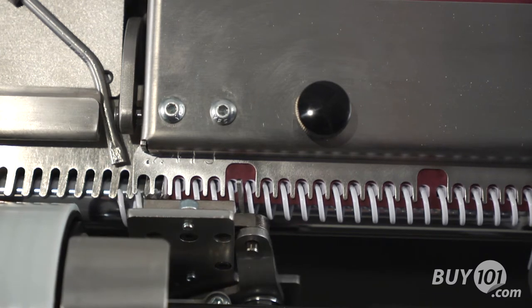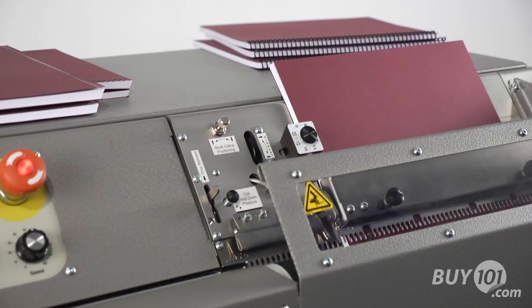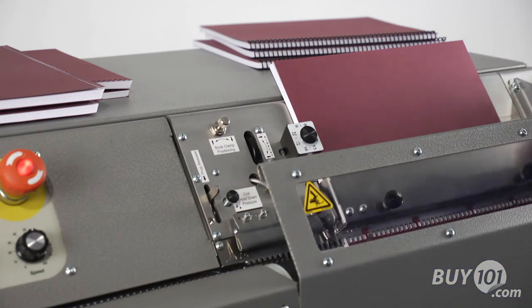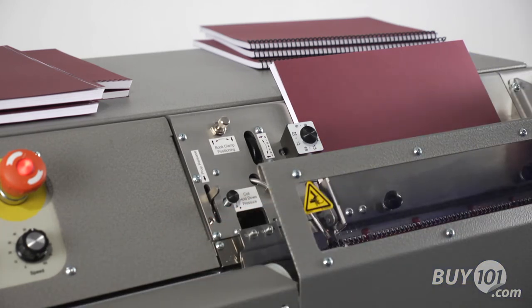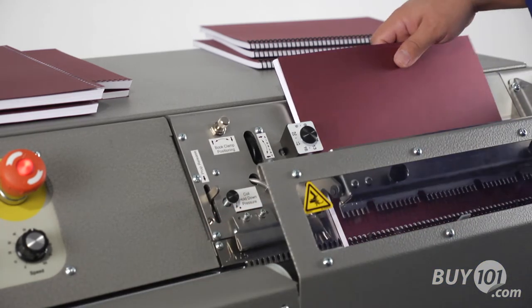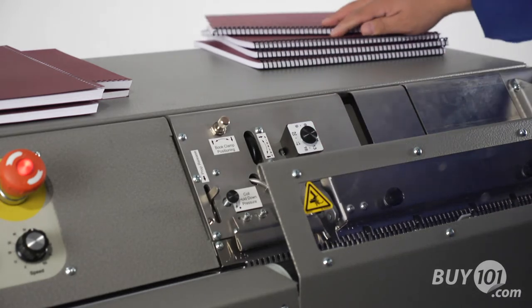Side lay, book clamp, and spine former work together to make sure each book is perfectly positioned to receive coil. Vertical book placement means that tabbed or extended cover books are bound flawlessly.